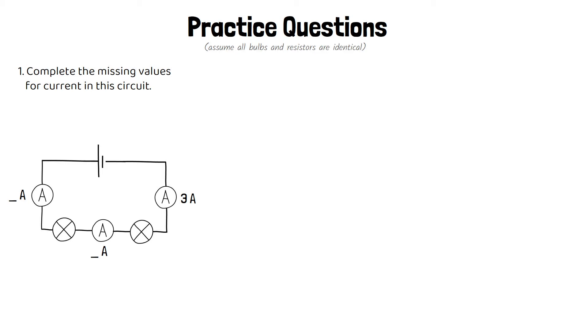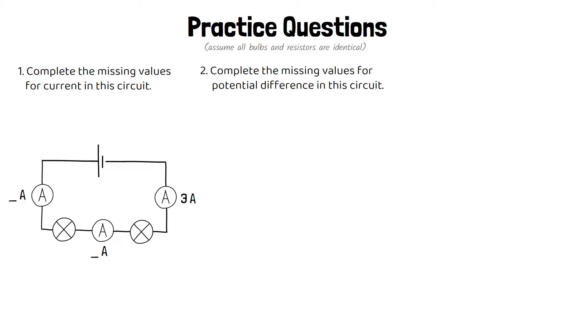Secondly, complete the missing values for potential difference in this circuit. If the cell has a potential difference of 10 volts, what will be the potential difference of the two bulbs, assuming that they're identical?